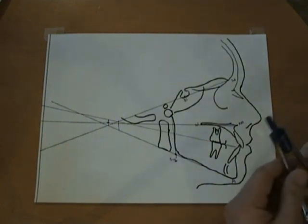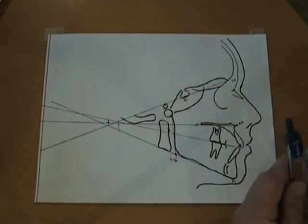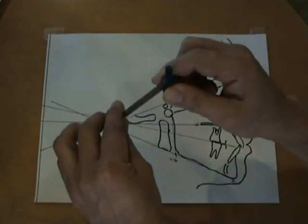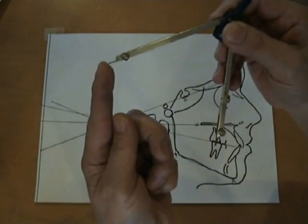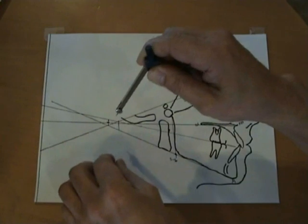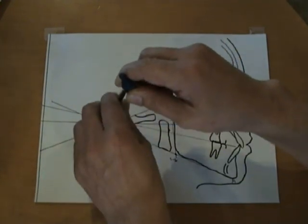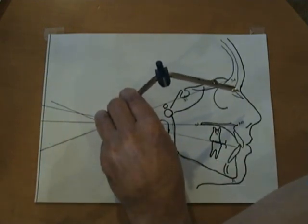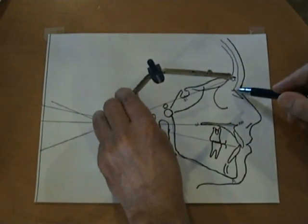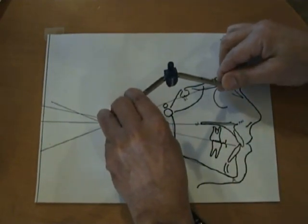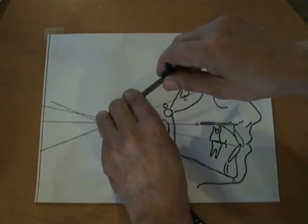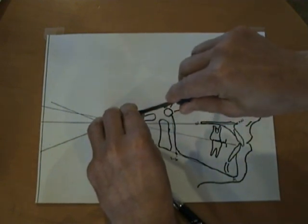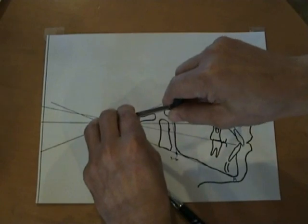To find anterior arc you need to get a compass, and I recommend that you don't get a cheap one. Get one that's a professional grade. This is the metal point. This is the pencil point. Put the metal point on Center O. Put the pencil point on Nazion. Nazion is right here. The pencil point is right there on Nazion, and then strike an arc going through Nazion all the way down past the chin point.